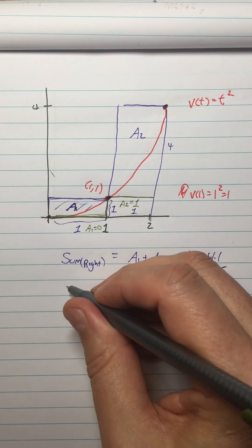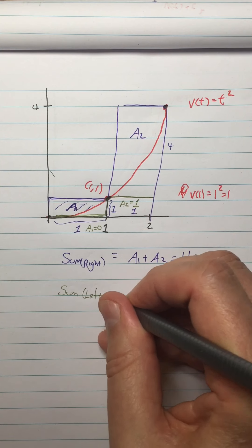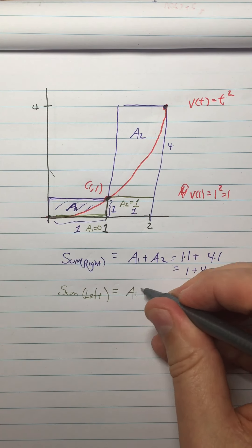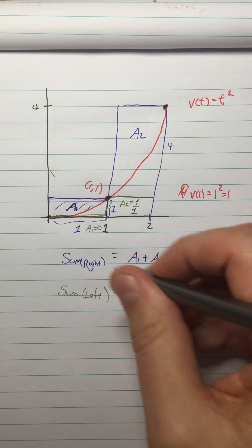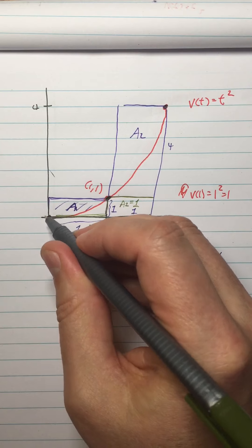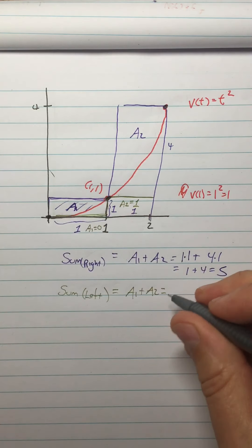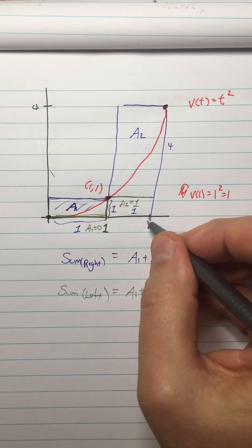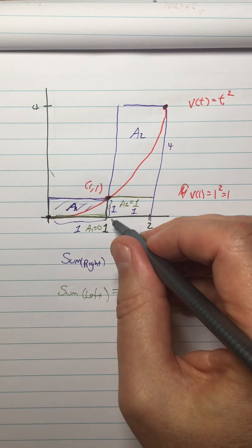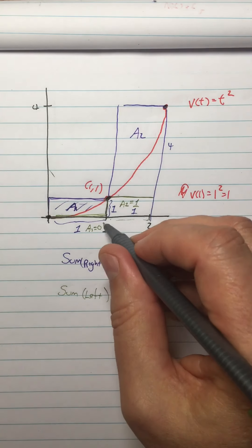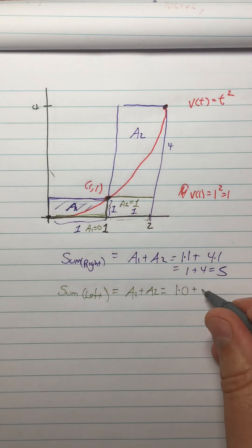So I can say that there's a sum from the left using the left endpoints of the rectangle, which is a different A1 plus A2. And the first A1 is, I can think of it as being 1 times 0, 0 being the function evaluated at the left endpoint, plus this area, which is 1 times 1. And that's like the base of the rectangle multiplied by the value of the function evaluated at that x-coordinate on the left, 1 times 1, which is 1.